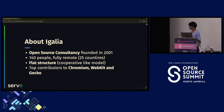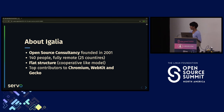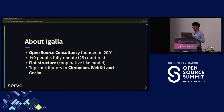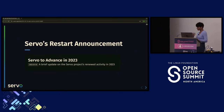Igalia are the top contributors in Chromium, WebKit, and Gecko — which is really important when we're talking about Servo, a rendering engine. Igalia had people with decades of experience working on rendering engines and browsers, so I personally couldn't think of a better fit to restart the Servo project.